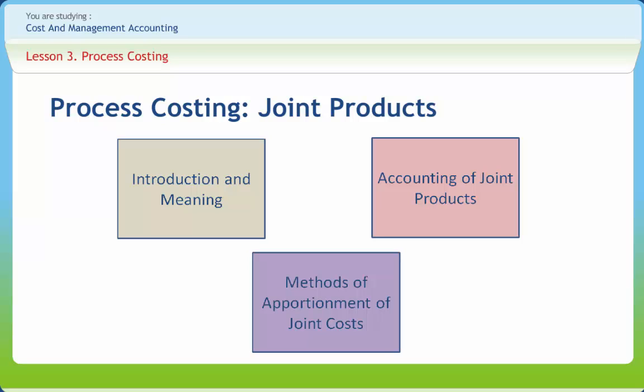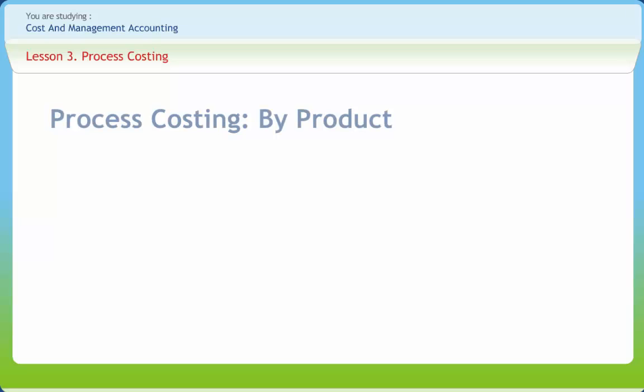Under the market value method, joint costs are apportioned according to the relative values of individual products, which is found to be the most suitable and convenient method. The joint products are split in the ratio of the selling price of individual products. By-products are products obtained in addition to the main products from the same process. These secondary products bearing saleability or usability in addition to the main products are known as by-products.